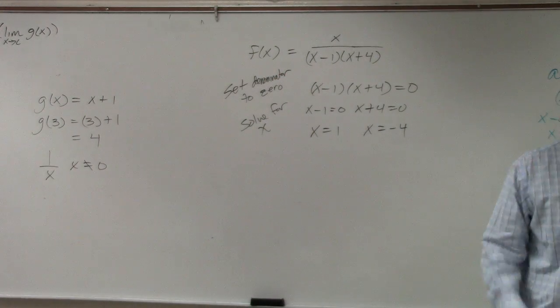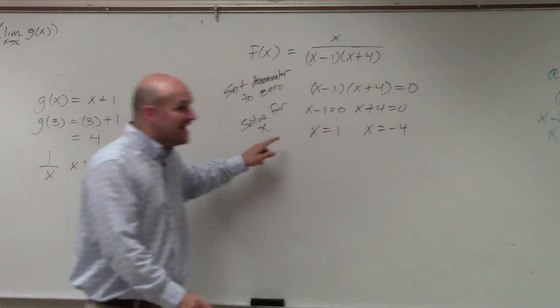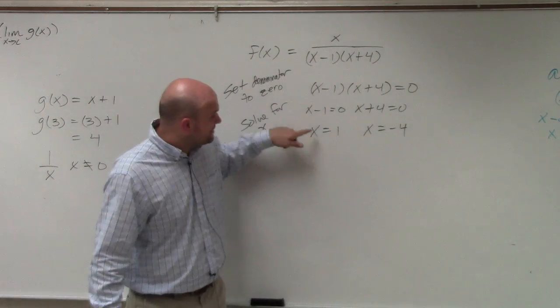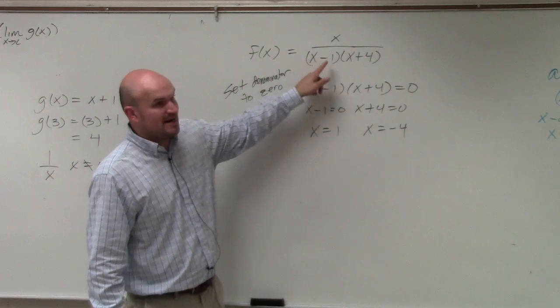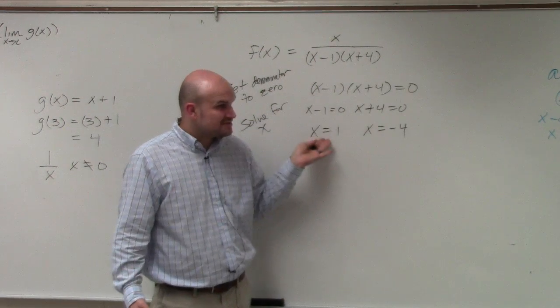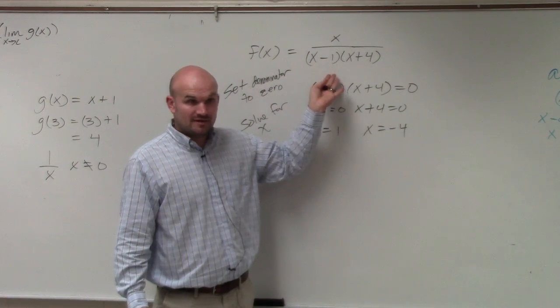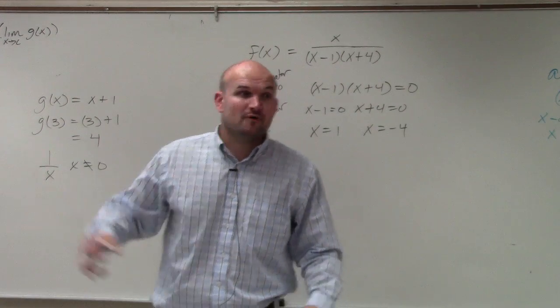OK, so let's try to understand what these values are. These are the values that when plugged in, when x equals 1, 1 minus 1 is 0, 0 times x plus 4 is 0. When these values are used in our function, they make our denominator equal to 0. And we can't divide by 0. That doesn't make a real number. So therefore, these values are not in our domain.